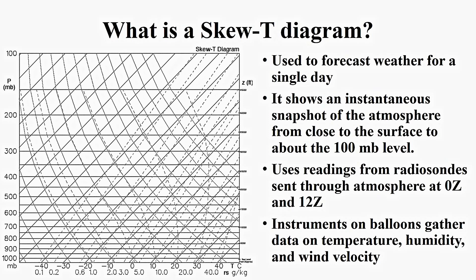How are these readings taken? These readings are taken using radiosondes, also known as weather balloons, which are sent throughout the atmosphere at 0z and 12z at thousands of locations across the world. Instruments on the balloons will gather data and transmit it back to the surface, where graphs such as the skew-t diagram are made.